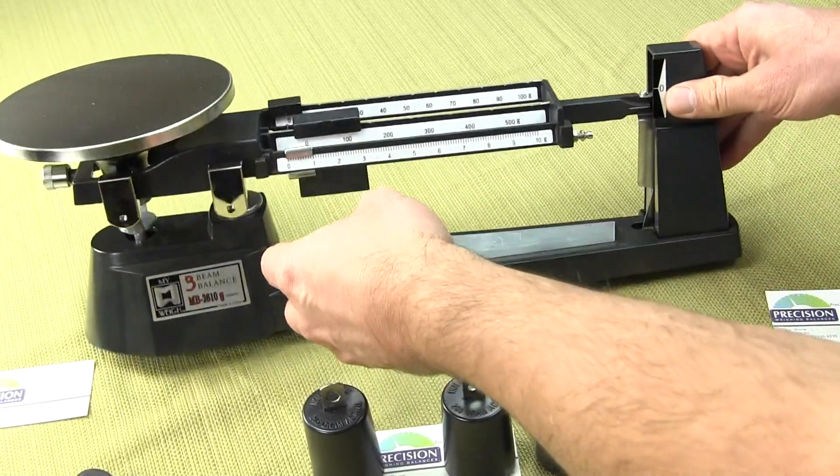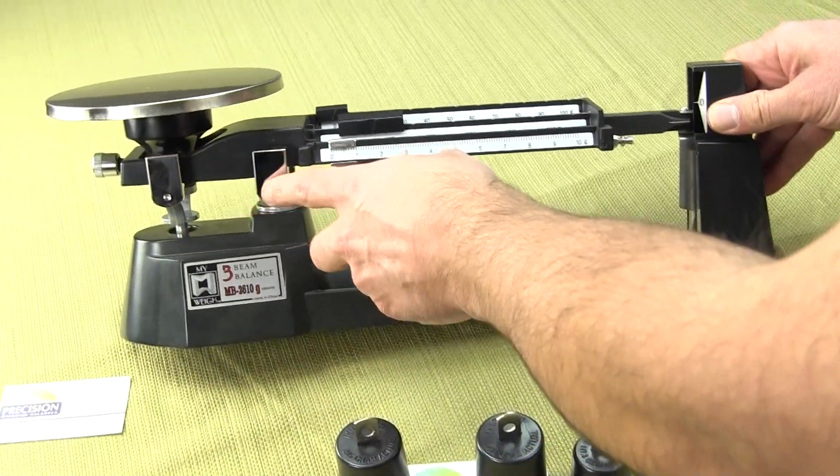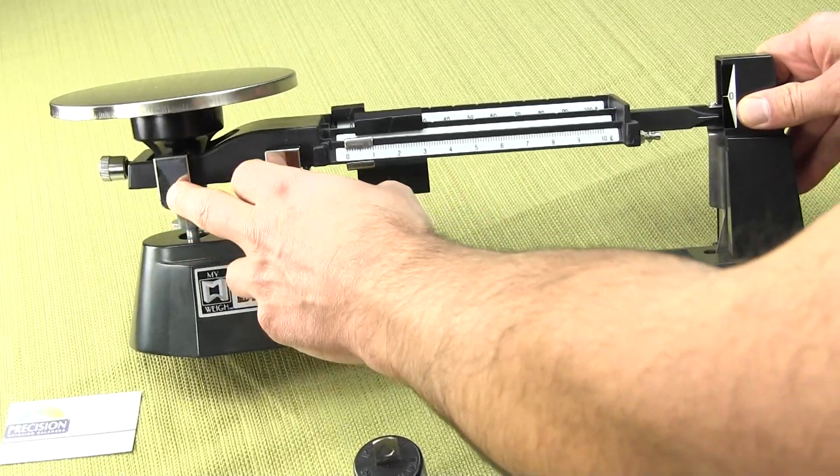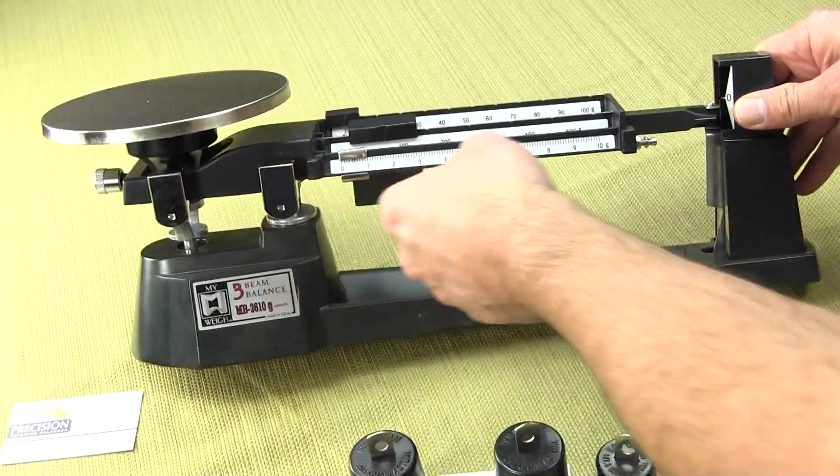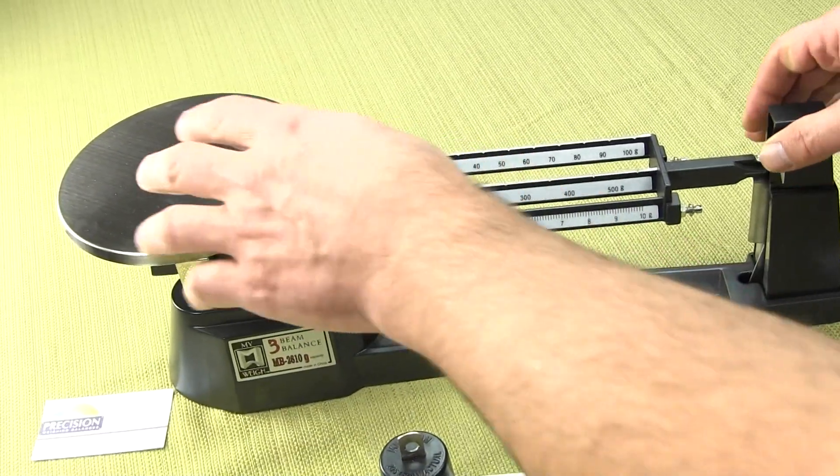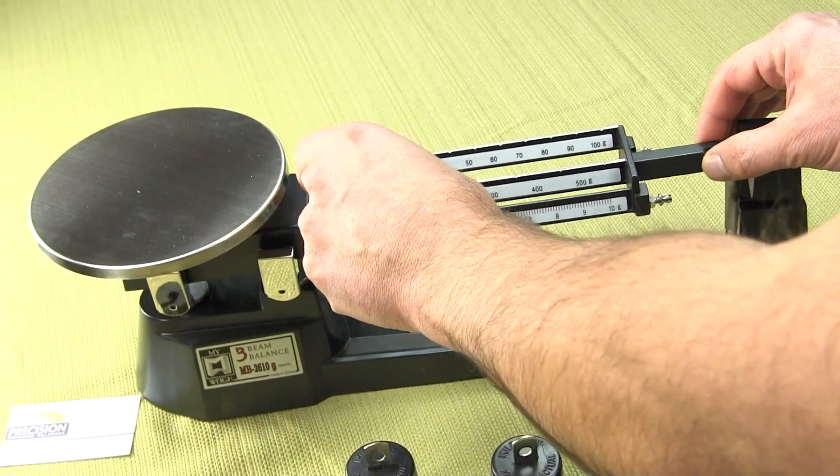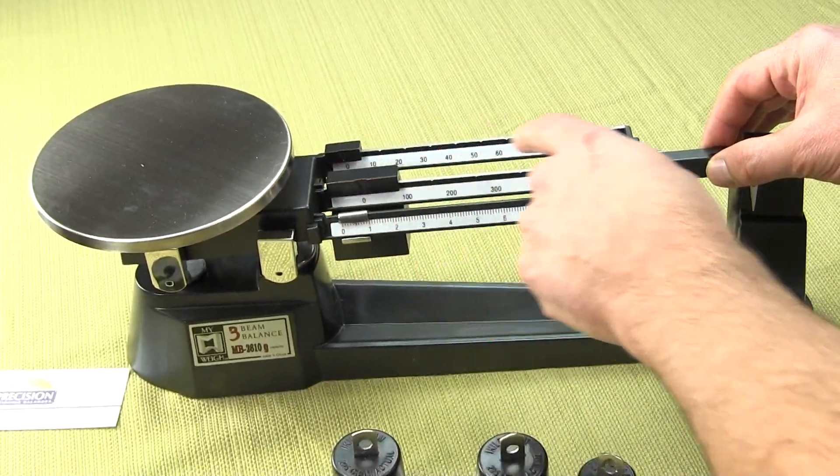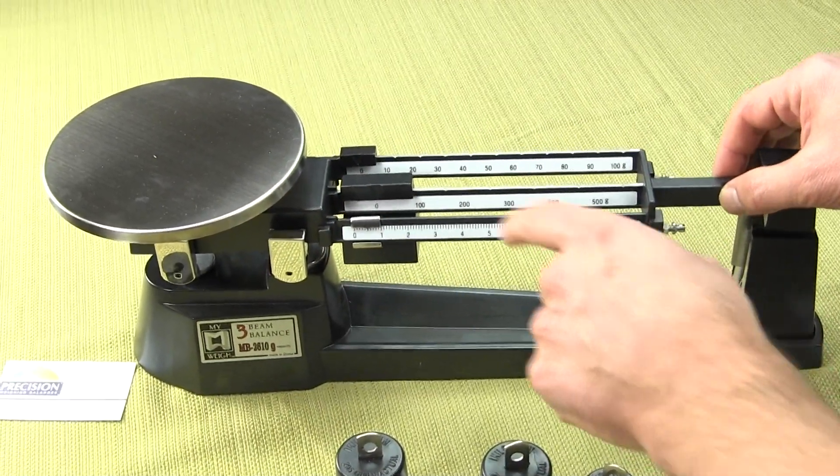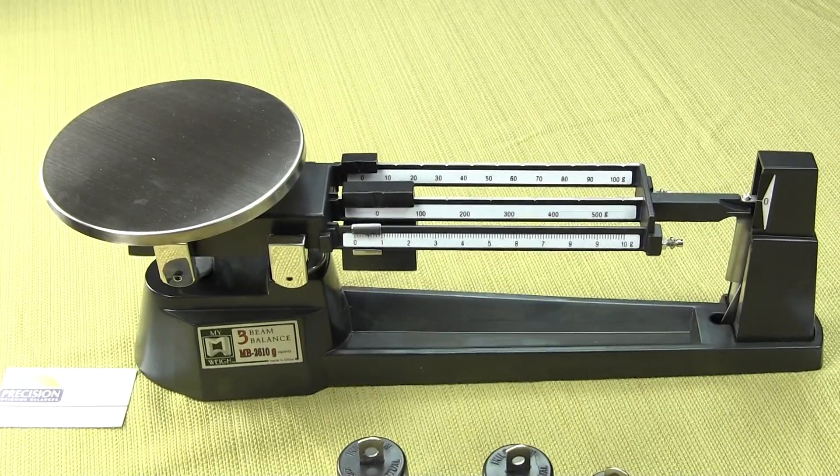The balance pivots on four agate bearings. There's two on this side and two on the other side. Just think of it like a seesaw. This is how the balance is working. You put a mass on one side and you adjust the riders to compensate for the weight. When it balances, that's the weight.